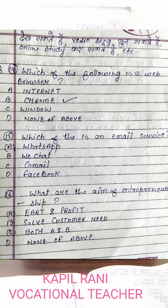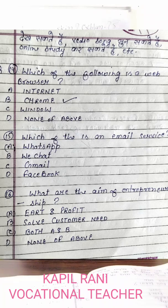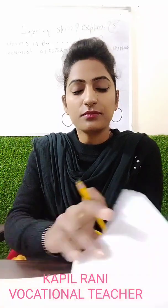What are the aims of entrepreneurship? The options are: A) Earn and profit, B) Solve customer needs, C) Both A and B, D) None of the above. Entrepreneurship means self-employment. The right answer is C — Both A and B. We become entrepreneurs to earn profit and to solve customer needs.